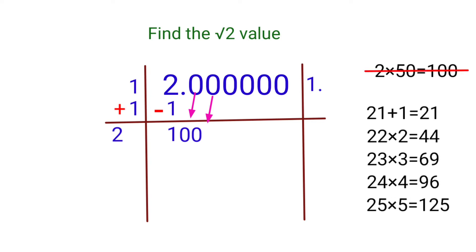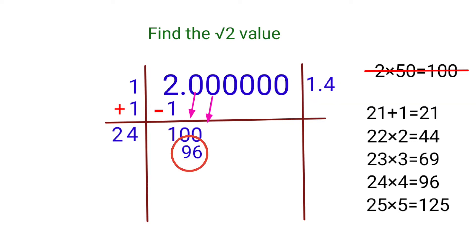We try: 21×1=21, 22×2=44, 23×3=69, 24×4=96, 25×5=125. Since 25×5=125 is greater than 100 and 24×4=96 is less than 100, we take 24. Write 4 in the quotient, 24 in the divisor, and 96 as the product. Subtracting: 100 − 96 = 4.